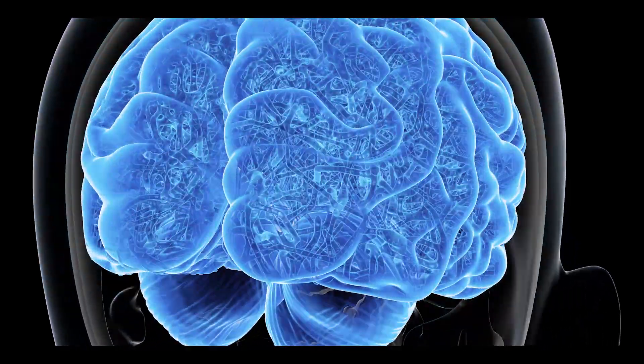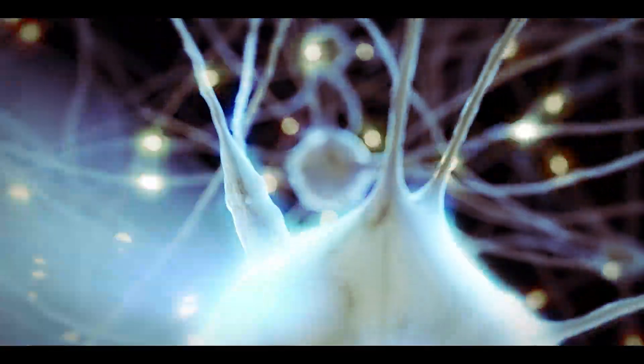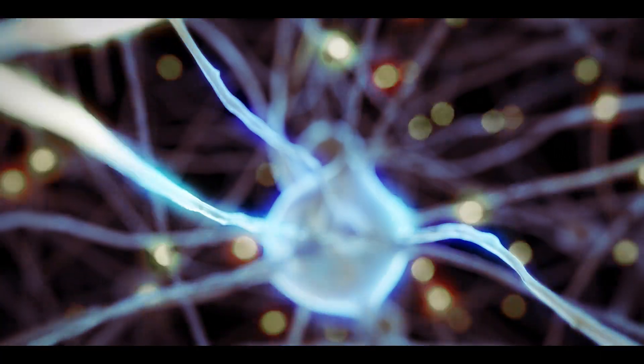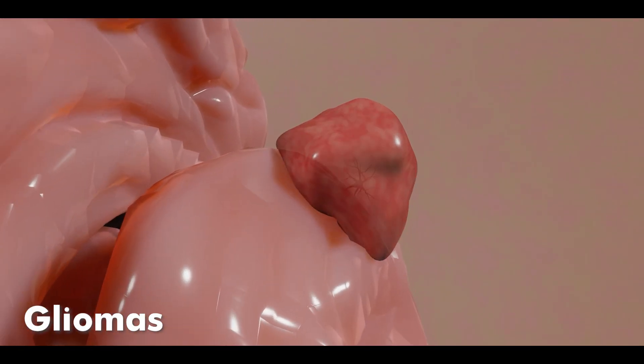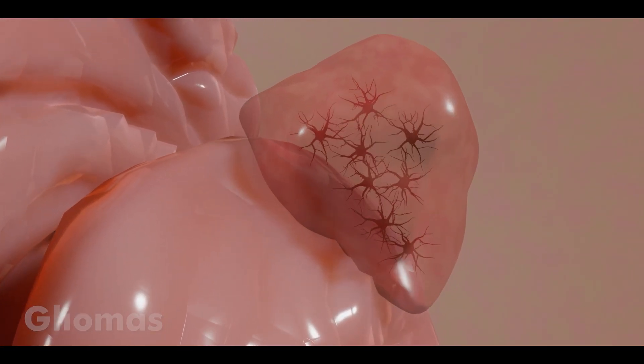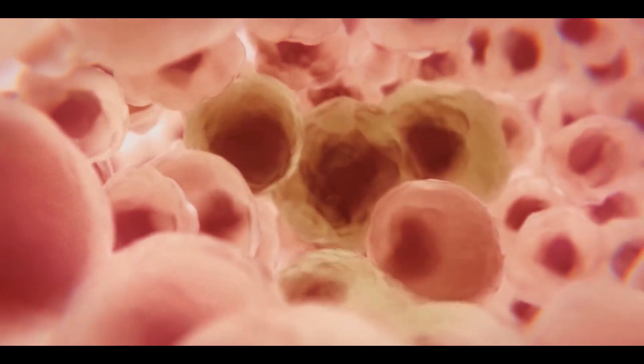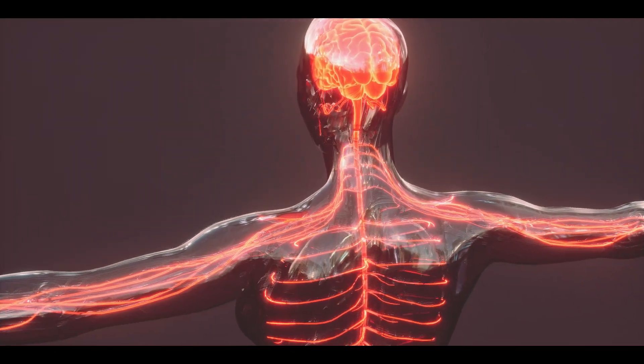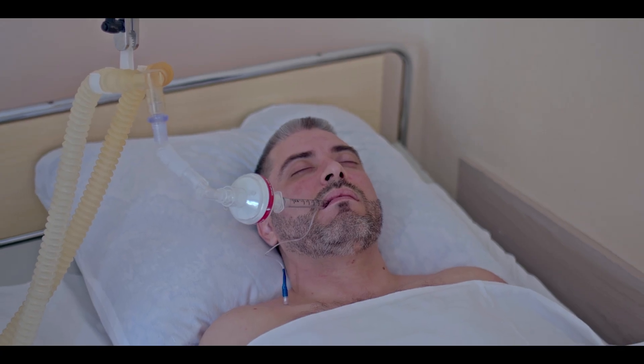Gliomas are a type of brain tumor that forms due to abnormal growth and development of glial cells in the brain. Gliomas are malignant tumors, meaning they grow rapidly and spread from one place to another, and can spread from brain to spinal cord. That's why, if gliomas cannot be treated timely, they may cause patients' death.